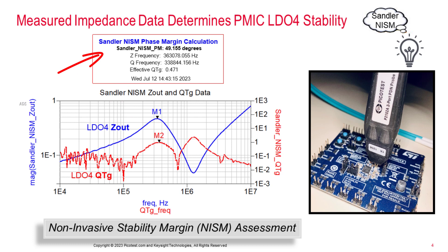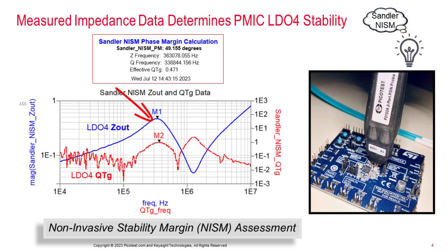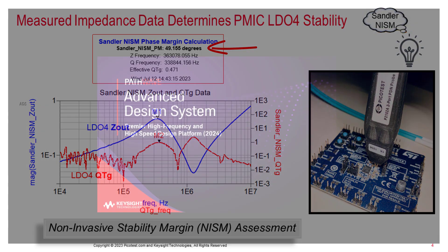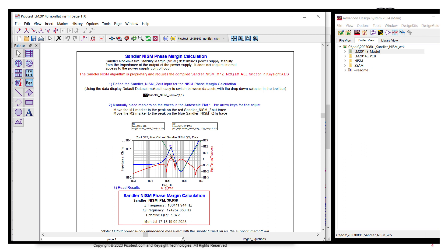As shown in this video, NISM is now available in the PathWave ADS EDA tool. Here you can see the measured output impedance plot at one of the six LDO output caps on the ST PMIC. You can also see that NISM reports the phase margin stability of the control loop is 49 degrees — computed directly from the impedance versus frequency data. The only requirement is access to an output capacitor. This Sandler NISM stability analysis tool is now available for ADS, and it's free.